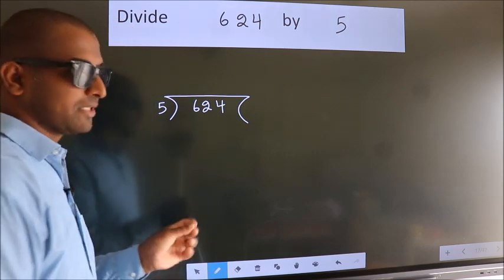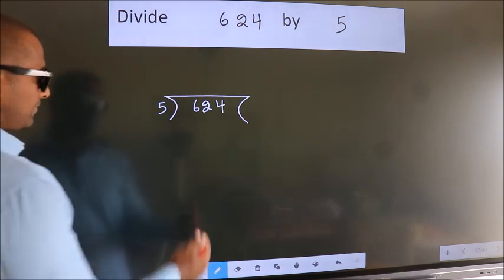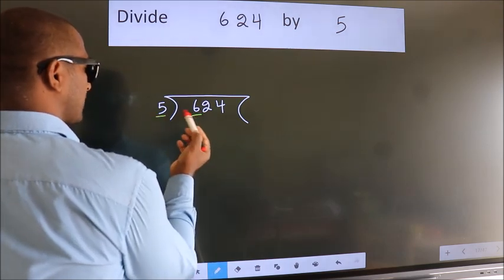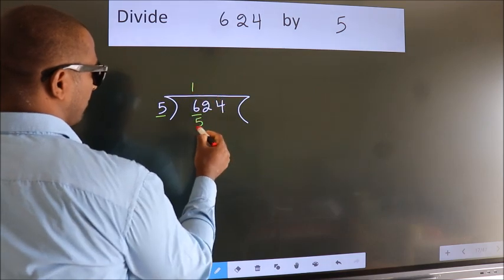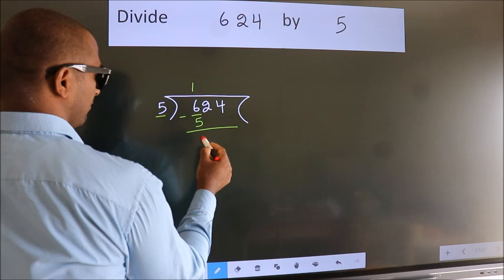This is your step 1. Next. Here we have 6, here 5. A number close to 6 in the 5 table is 5 once 5. Now we should subtract. We get 1.